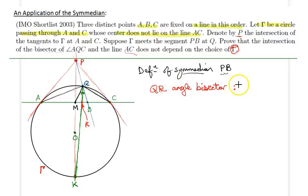We can apply the angle bisector theorem, which is simply AR over RC equals AQ over QC. All we need to do is now to show that this expression AQ over QC does not depend on the circle gamma. Like the first proof, we will repeatedly apply the law of sines.